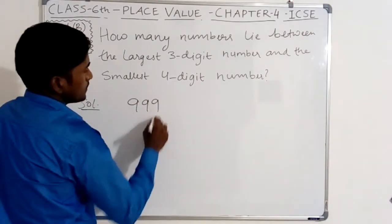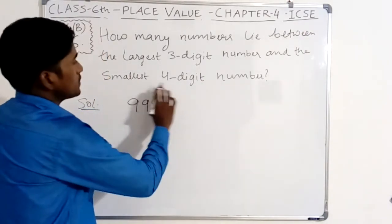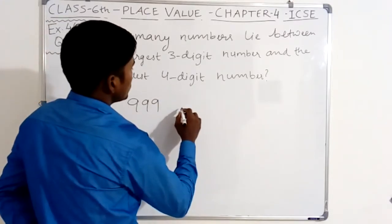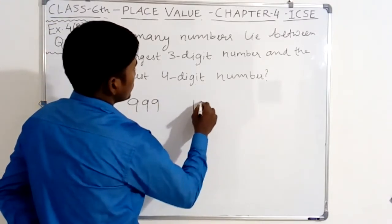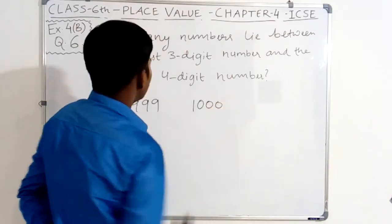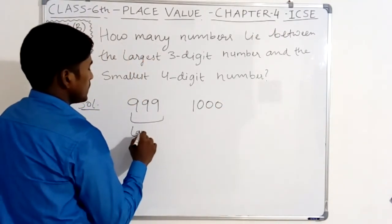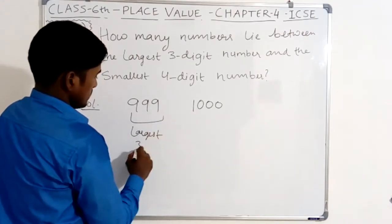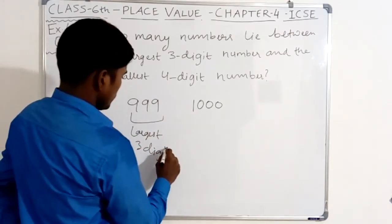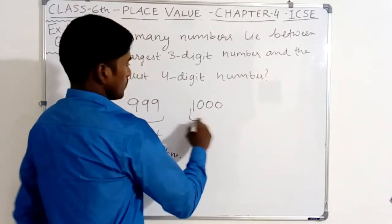So the solution is: the largest three-digit number is 999, and the smallest four-digit number is 1000.